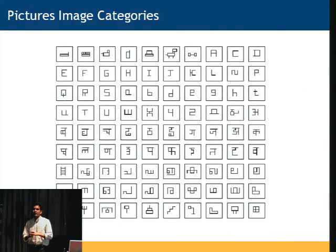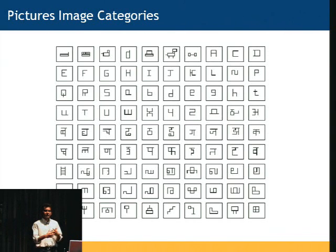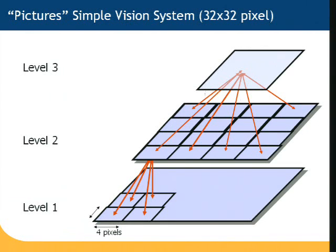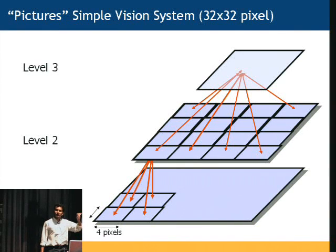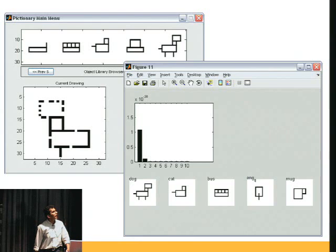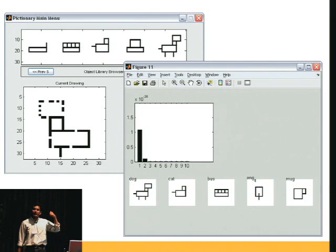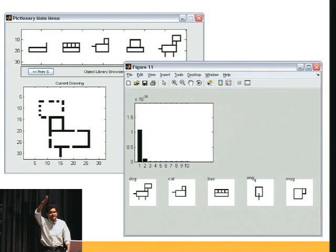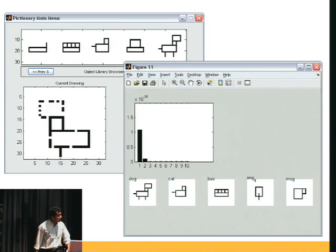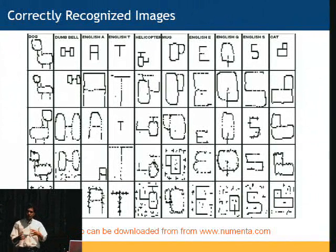What have we done with this system? We trained the system on some line drawing images. We built a hierarchy, and since vision is actually a spatiotemporal process, we take these images and move them around to create spatial and temporal aspects — this creates invariant representations, and the system learns invariant representations in a hierarchy. Then you can present a new image and ask the system what it corresponds to. It gives a probabilistic answer at the top, using Bayesian belief propagation techniques so that ambiguity is resolved efficiently and in parallel. It's a modest example, but its performance gives us a lot of faith in what we are doing.